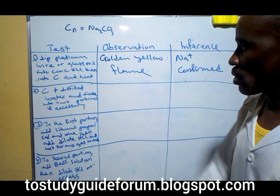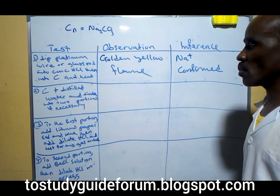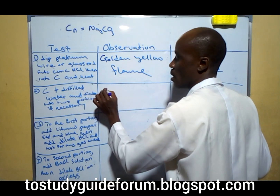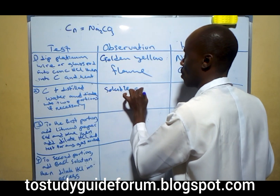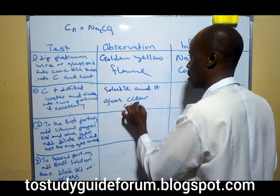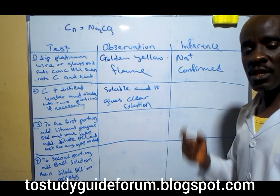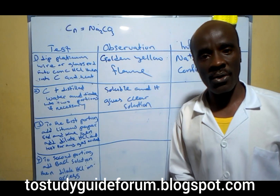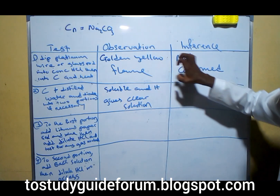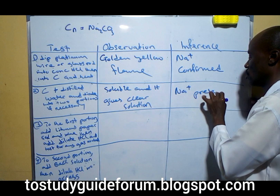The second test is C plus distilled water, divided into two portions if necessary. When you add distilled water into it, you observe that it is soluble and it gives a clear solution. For the fact that it gives a clear solution, there are three possible ions that can do this — they are soluble in every case. That is sodium ion, potassium ion, and ammonium ion. Since we already confirmed the golden yellow flame, sodium ion is present.